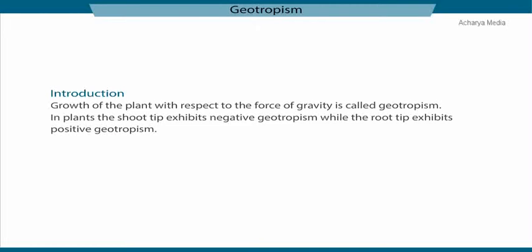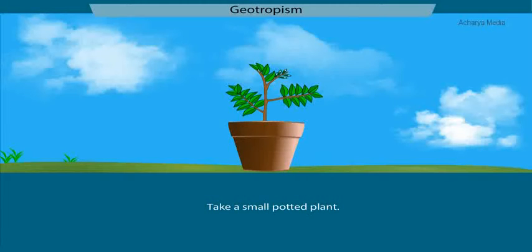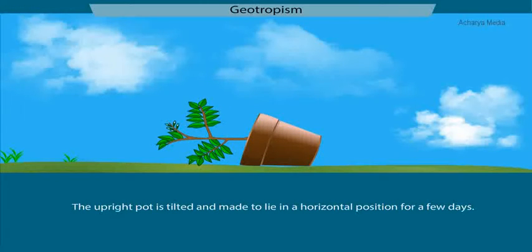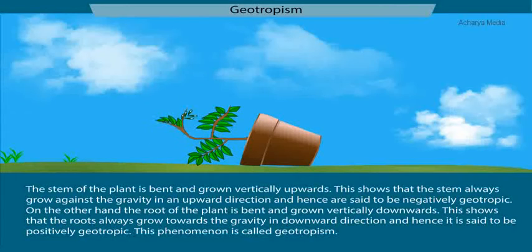To illustrate geotropism with an experiment, take a small potted plant and tilt the upright pot to lie in a horizontal position for a few days. After a few days, you can observe that the stem of the plant bends and grows vertically upwards, showing that the stem always grows against gravity and is negatively geotropic. On the other hand, the root of the plant bends and grows vertically downwards, showing that the root always grows towards gravity and is positively geotropic. This phenomenon is called geotropism.